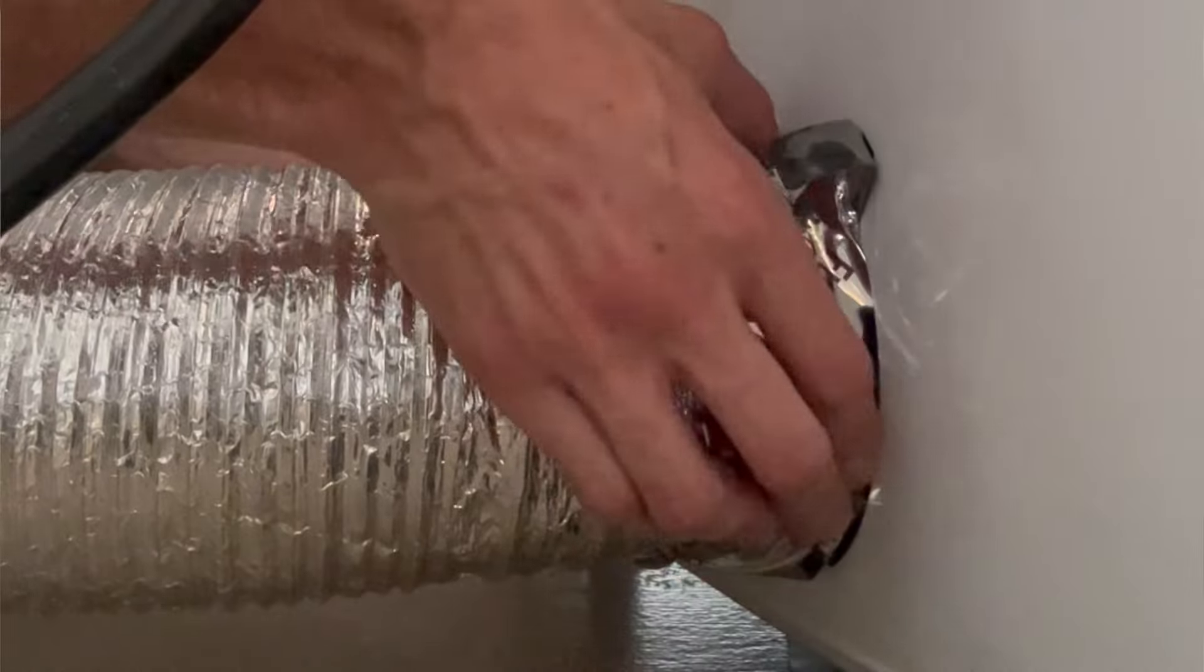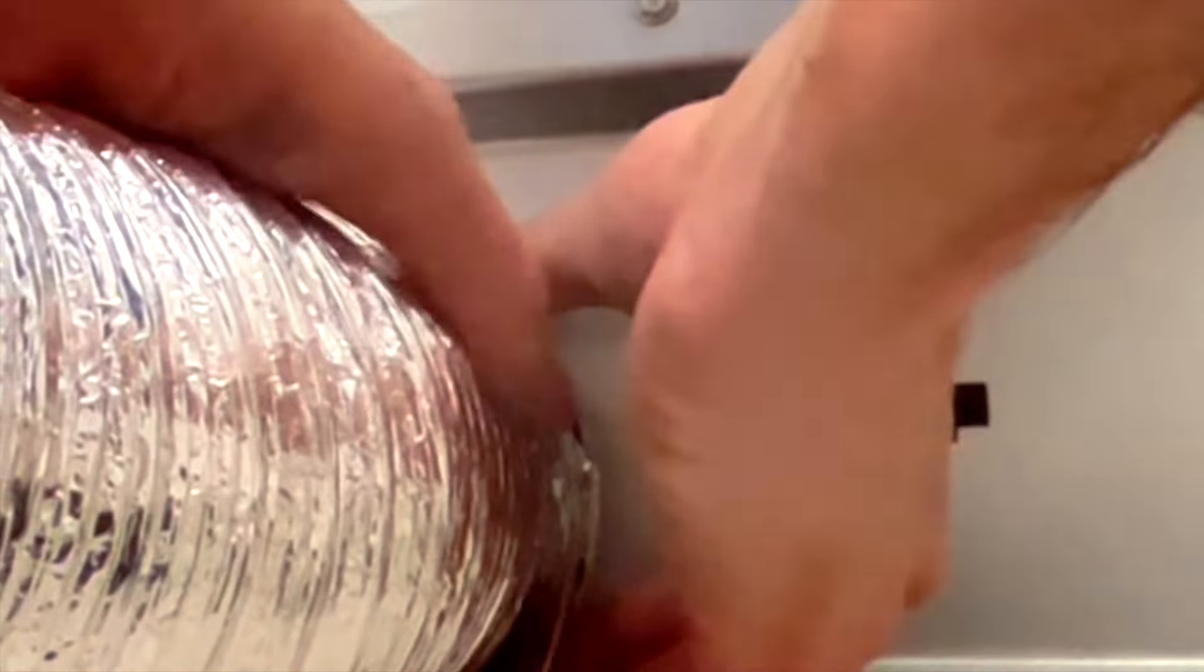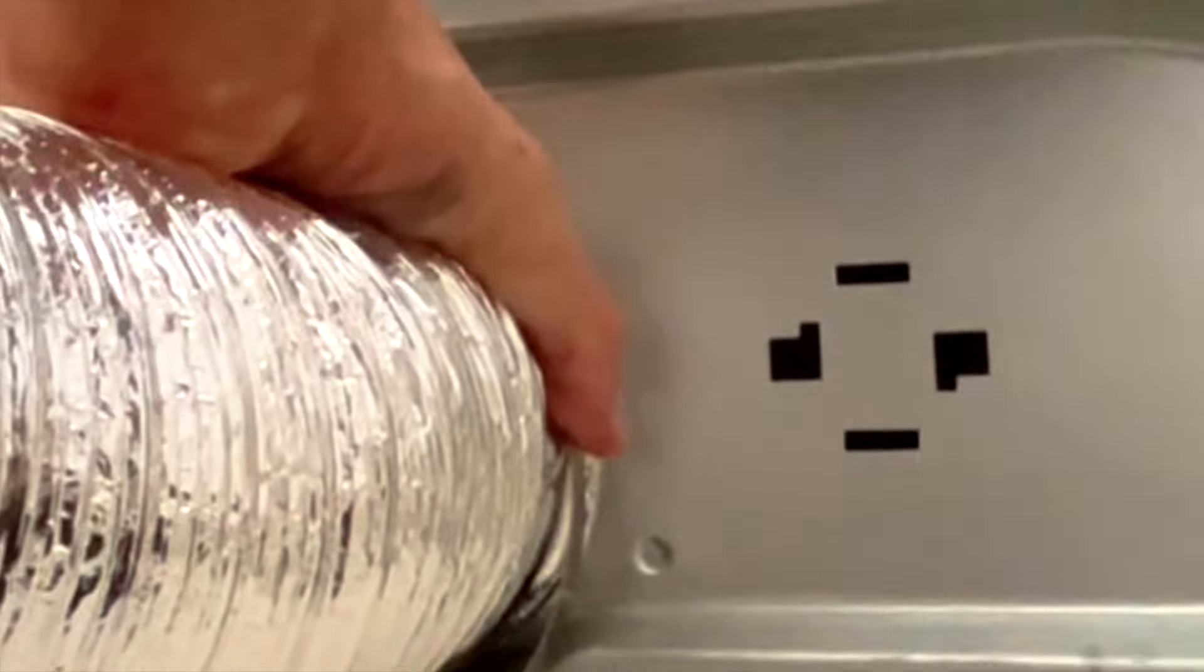There we go. Again, we're gonna leave a slight bit of the actual vent exposed so our tape has something to grab on. We're getting the tape on. This is not to hold the vent on - make sure you use a clamp as well. This is just to make sure the vent doesn't rip and give us some extra protection from the dust and heat coming out.